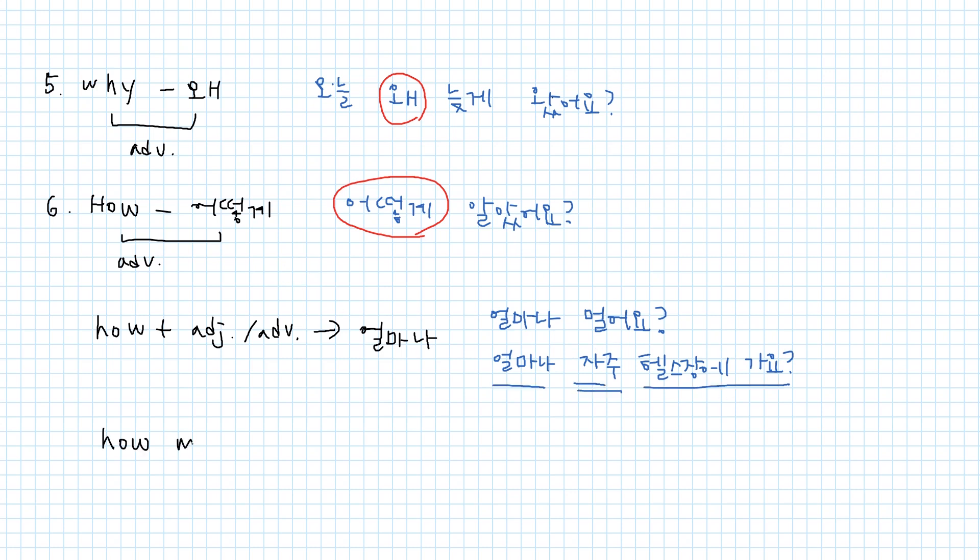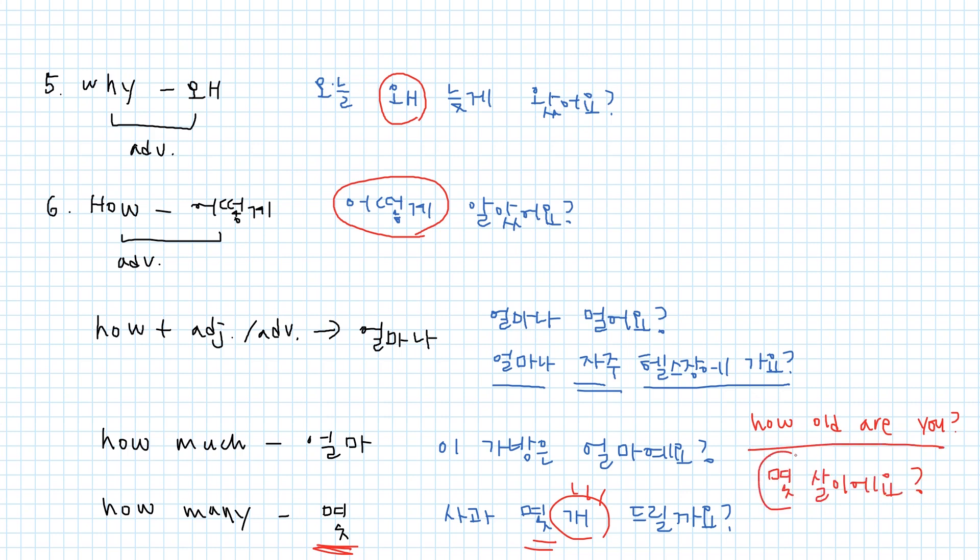And how much? In Korean, 얼마. For example, 이 가방은 얼마예요? How much is this bag? And how many? In Korean, 몇. For example, 사과 몇 개 드릴까요? How many apples do you want to have? 개, the counter for things is used. If what you're asking is countable, then you should use 몇. For example, how old are you? What you're asking is the age, which is countable. That's why in Korean, 몇 살이에요? Here, 몇 is used.